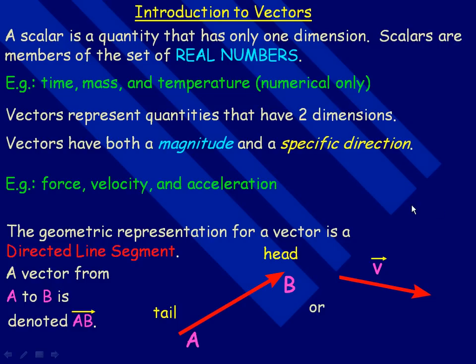In this lesson we'll take a look at an introduction to vectors. So first of all what a scalar is, what a vector is. A scalar is a quantity that has only one dimension. Scalars are members of the set of real numbers. They're just numerical. They only have a size, a number associated with them.